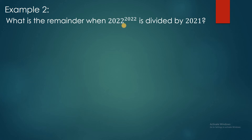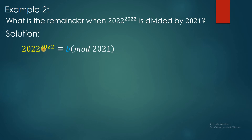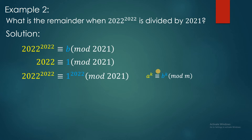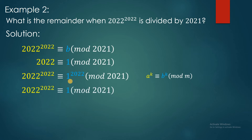Example 2: What is the remainder when 2022 raised to 2022 is divided by 2021? We have 2022^2022 congruent to B modulo 2021. Starting with 2022 congruent to 1 modulo 2021, because when 2022 is divided by 2021 the remainder is 1. Using the power property of congruence, raise both sides to the power 2022. Therefore 1 raised to this exponent is always 1, so the remainder B is equal to 1.